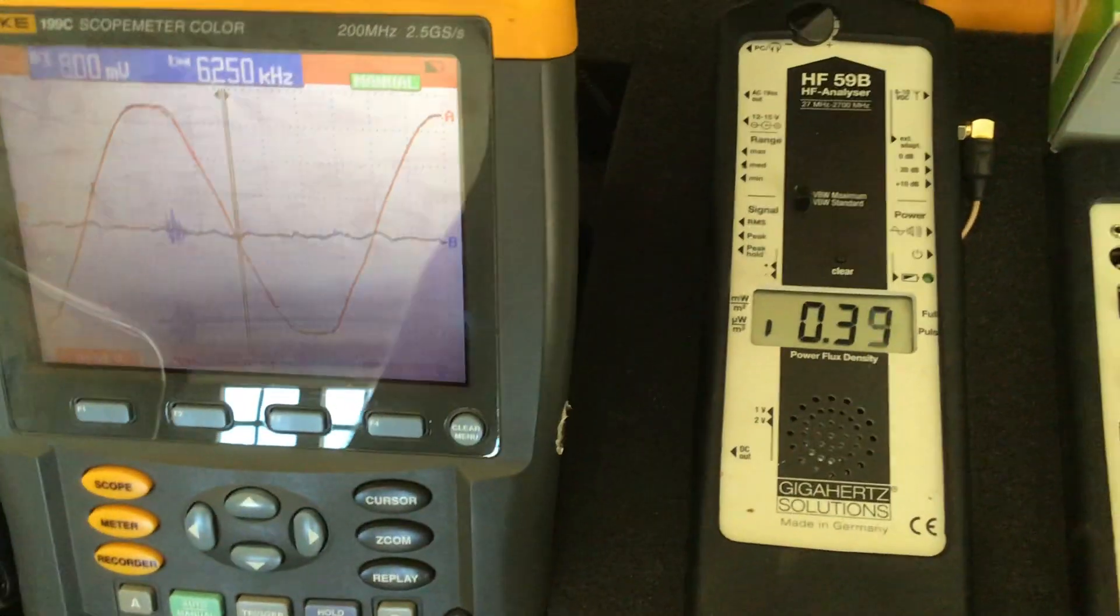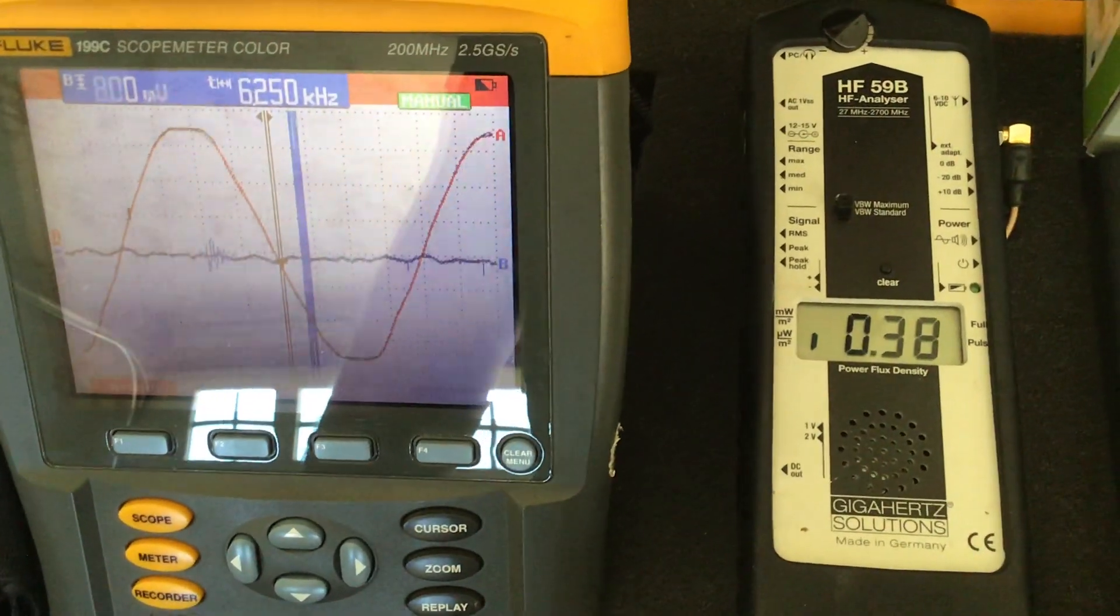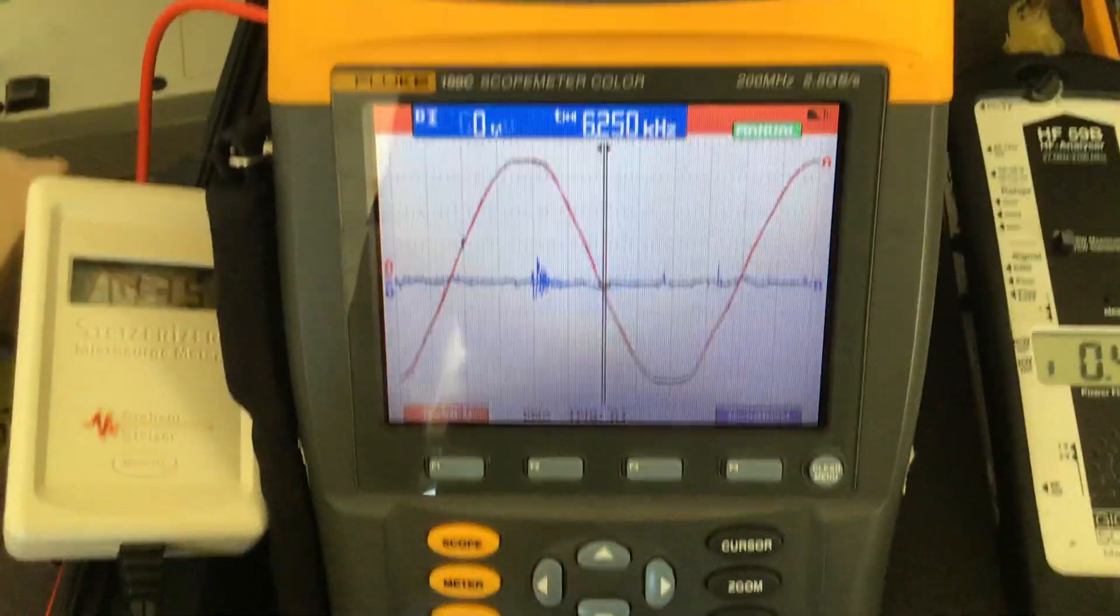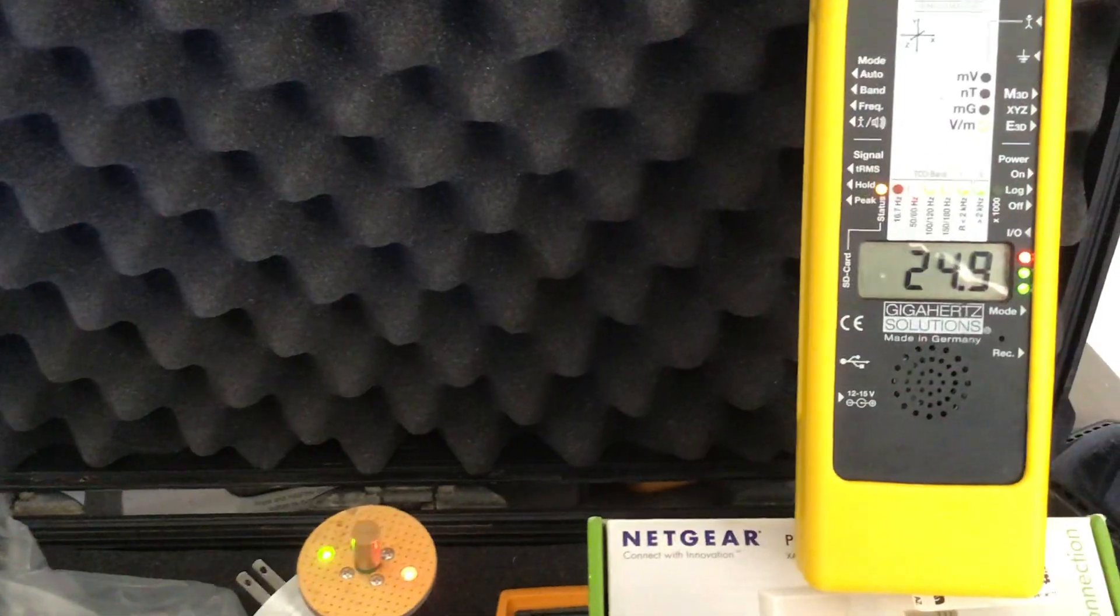I don't know why my RF meter is going up, but it is, just ever so slightly. A little bit of a pulse. So these are pulse frequencies that are radiating out into your electric field.